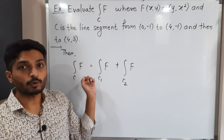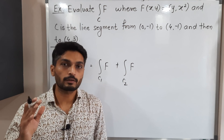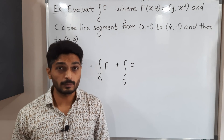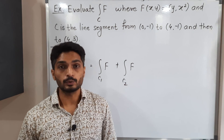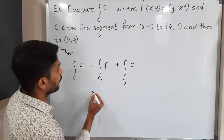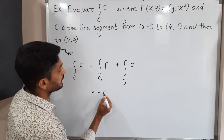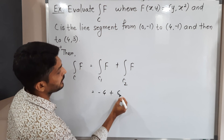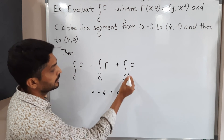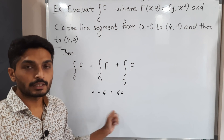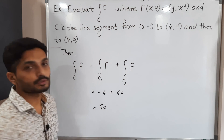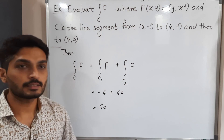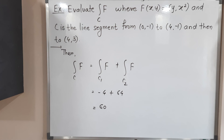Finally, the line integral of f over C equals the integral over C1 plus the integral over C2, which is -4 + 64 = 60. So the required answer is 60.